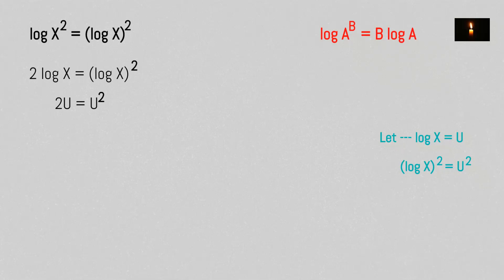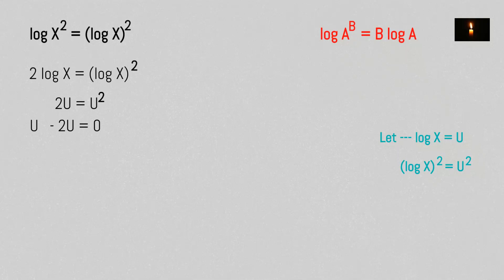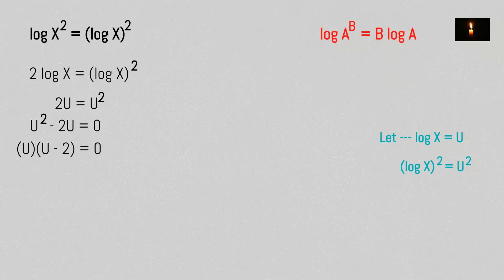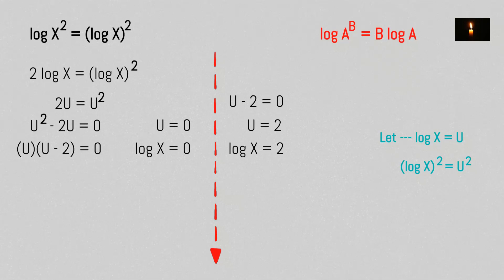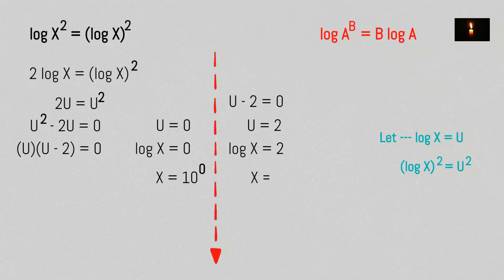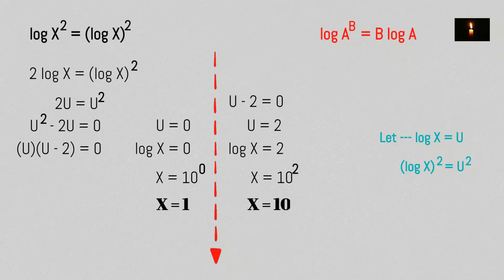We have u² equals 2u, so u² minus 2u equals 0. Factoring: u(u - 2) equals 0, giving u equals 0 or u equals 2. Back-substituting: if log x equals 0, then x equals 2^0 equals 1; if log x equals 2, then x equals 2² equals 4. So x equals 1 or x equals 4.